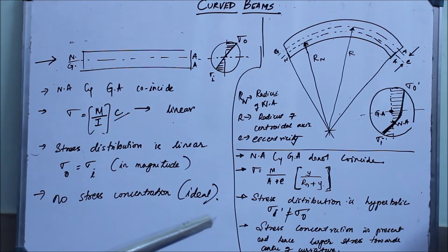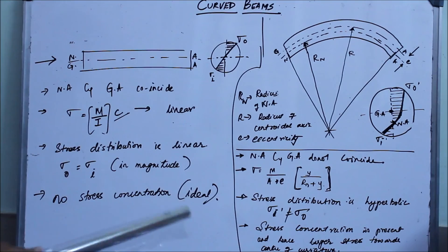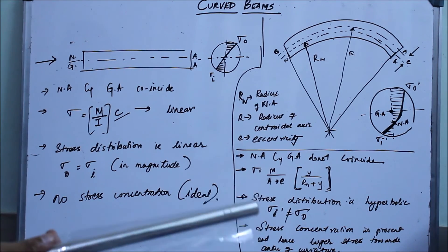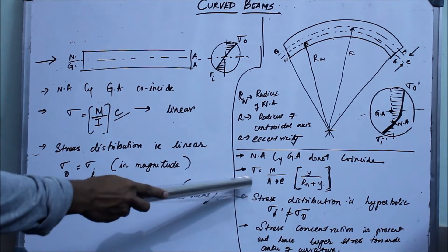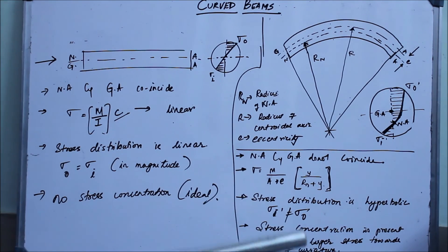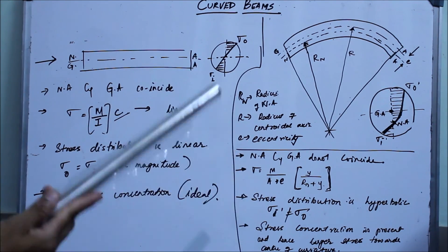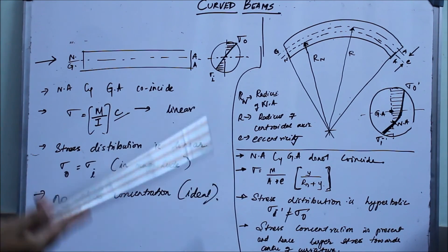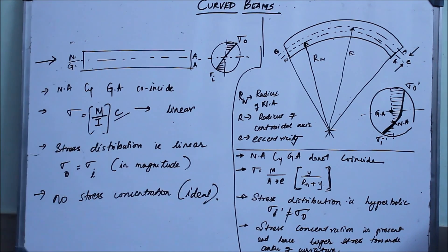So that's the introduction to curved beams. To summarize the main features: the centroidal axis (geometric axis) and the neutral axis do not coincide — GA and NA do not coincide. The bending stress equation is different from that of straight beams. The stress distribution is hyperbolic. The stresses at the extreme fibers are unequal. And there is a presence of stress concentration factor. In my next video, I will derive the curved beam bending stress equation and explain all the terms.